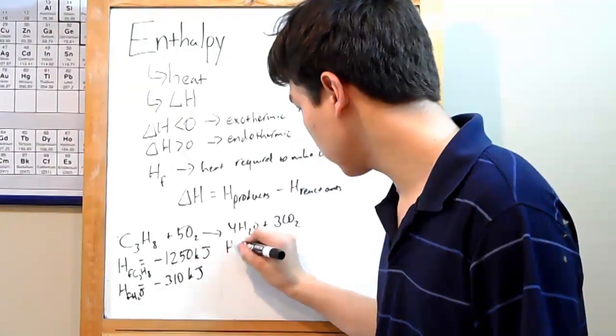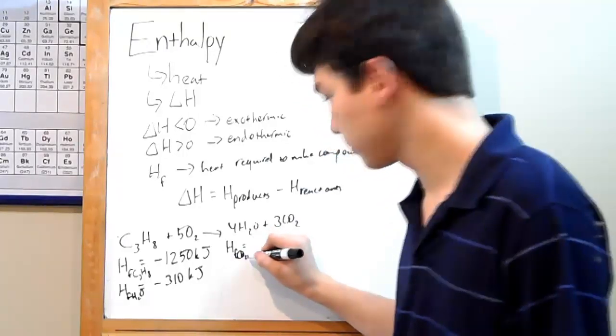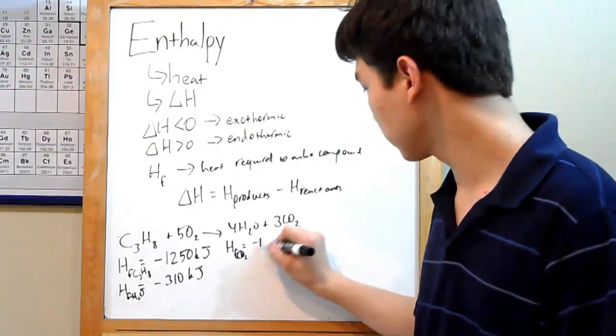And last, HF for CO2. How about we pick negative 100 kJ.